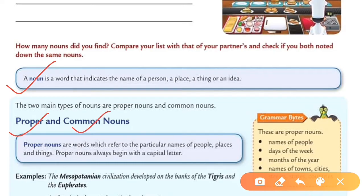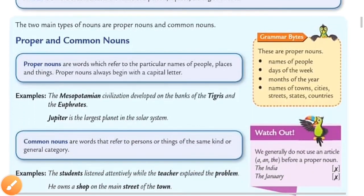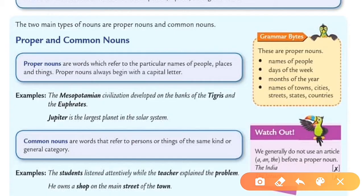Proper nouns are words that refer to particular names of people, places, or things, and they always begin with a capital letter. For example: Jupiter is the largest planet in the solar system. Jupiter is the name of one particular planet, so this is a proper noun.